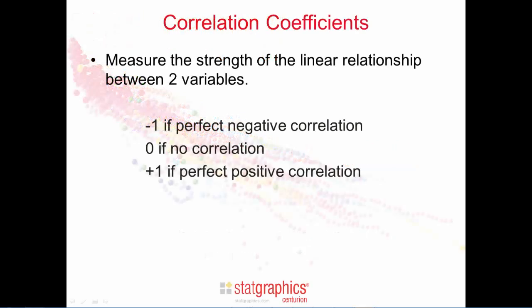A correlation coefficient measures the strength of the linear relationship between two variables. It's scaled so that it equals minus 1 if there's perfect negative correlation, it equals 0 if there's no correlation, and it equals plus 1 if there's perfect positive correlation.